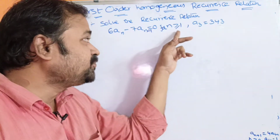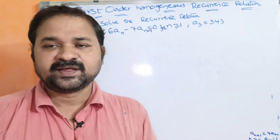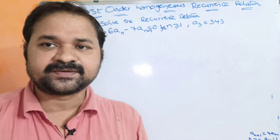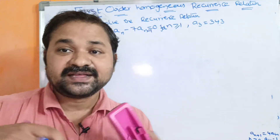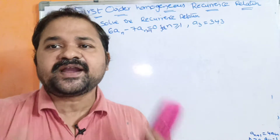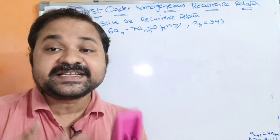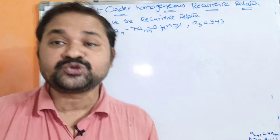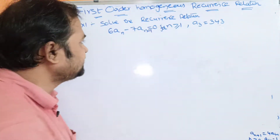For a first-order homogeneous recurrence relation, N value should be greater than or equal to 1. If it is a second-order homogeneous recurrence relation, then N should be greater than or equal to 2. If it is third-order, then N should be greater than or equal to 3. So there is no problem with this condition.